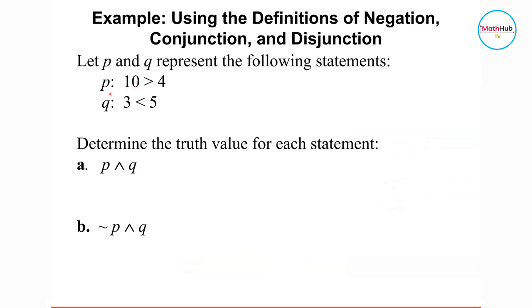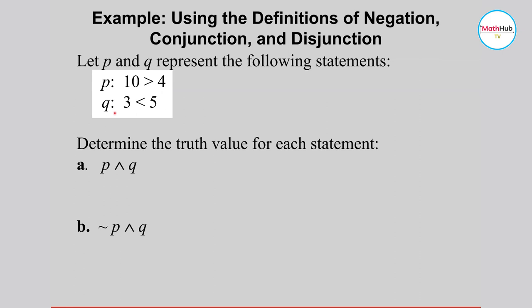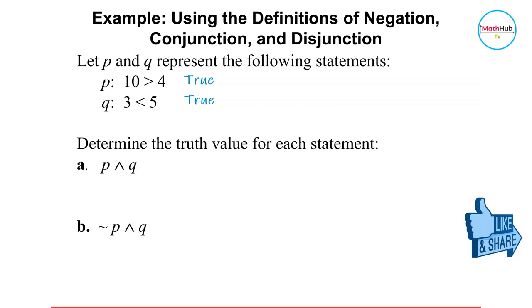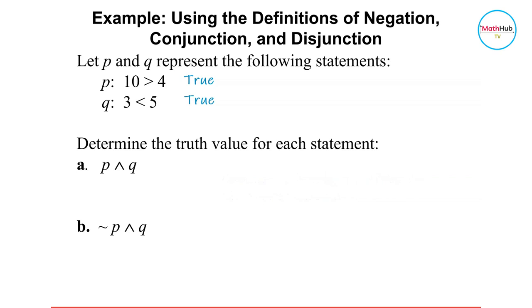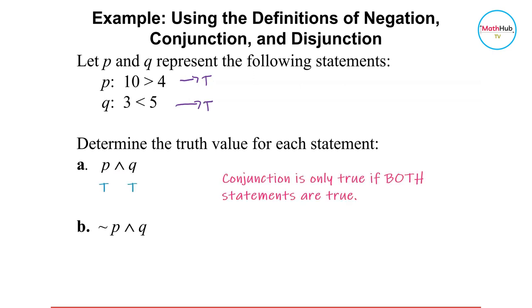In this example, we set P to be the statement '10 is greater than 4,' and Q represents the statement '3 is less than 5.' Both of these statements are true, so P is true and Q is true. For the first one, we have P and Q — a conjunction. Since both P and Q are true, and for conjunction, if both statements are true, the conjunction is also true.